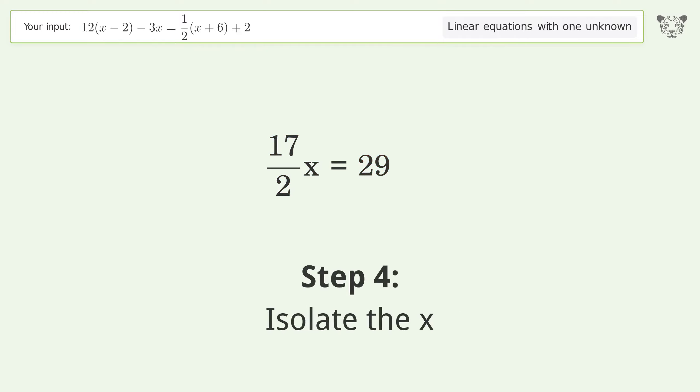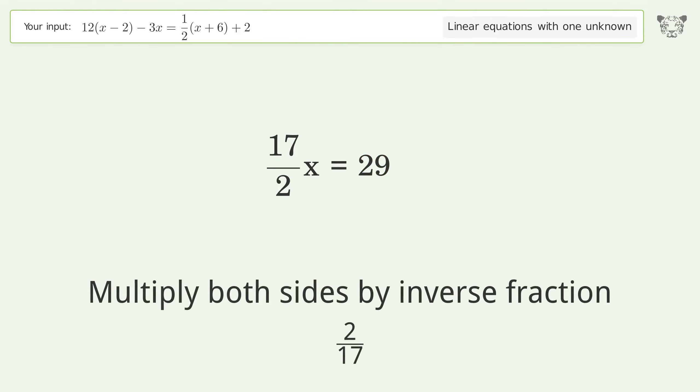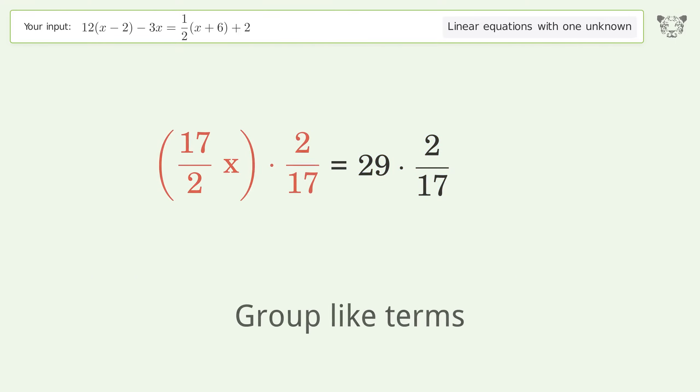Isolate the x. Multiply both sides by the inverse fraction 2 over 17. Group like terms.